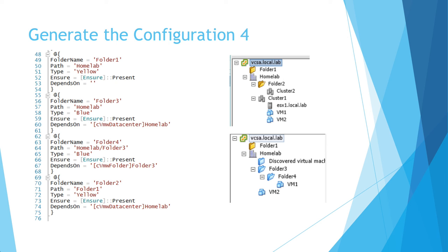Once you have this, it's easy to put under source control. You can use this to find drift — if somebody changes or deletes a folder, DSC will find it and correct it. But you could also use this to migrate your environment. Suppose you have a new vCenter, a new version, an update, or new hardware, and you want to transplant your complete environment — you could create that configuration file and use it to recreate exactly the same structure on the other vCenter. Use cases include source control, migration, recreation, and DR environments where part of your environment disappears.